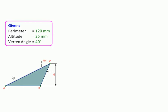Here we have been given a triangle construction problem: constructing triangle ABC such that its perimeter is 120 millimeters, its altitude is 25 millimeters, and the angle at the vertex is 40 degrees.